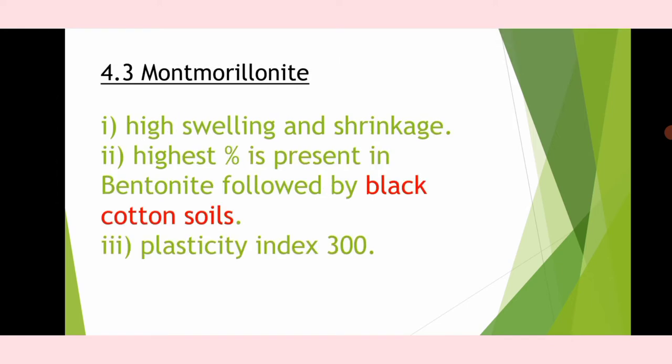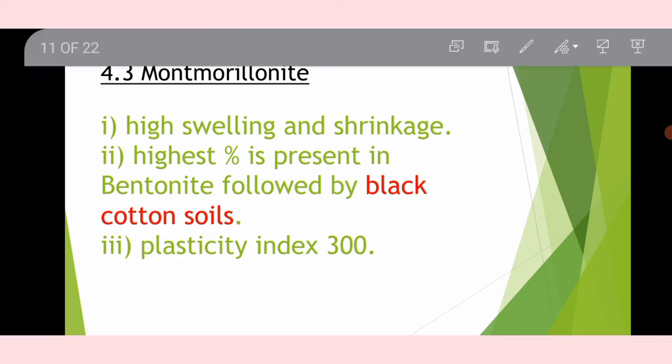Montmorillonite has high swelling and shrinkage. It is present in the highest percentage in bentonite, followed by black cotton soil. Its plasticity index is 300. Maximum plasticity index belongs to montmorillonite, with minimum silica content.